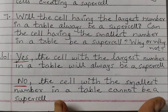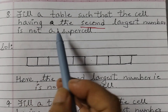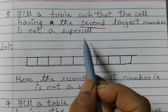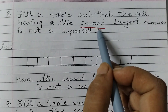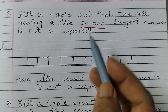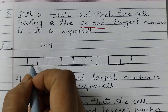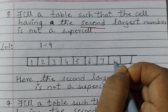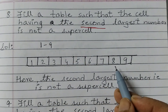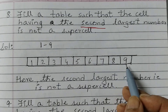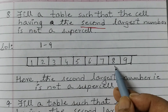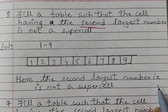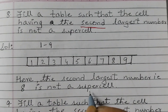Moving on to question number 8: Fill a table such that the cell having the second largest number is not a supercell. We need to fill a table so that the second largest number is not a supercell. Let's take the numbers 1 to 9 and fill up the table: 1, 2, 3, 4, 5, 6, 7, 8, 9. Now 9 is the largest number and 8 is the second largest number, and it is not a supercell. So here the second largest number, 8, is not a supercell.